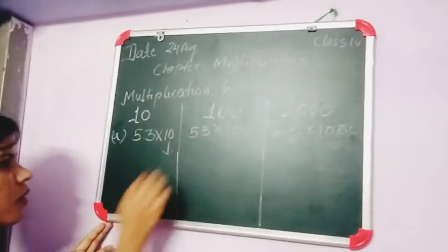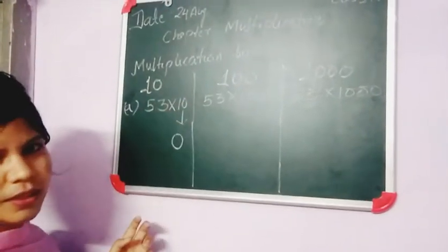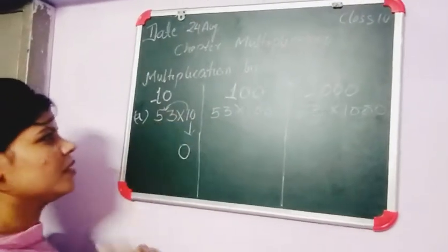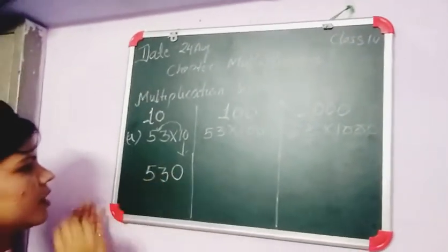Then, here is only 10. You should write 10 here, and you should multiply this number by 1. 53 times 1 is 53. Understand?